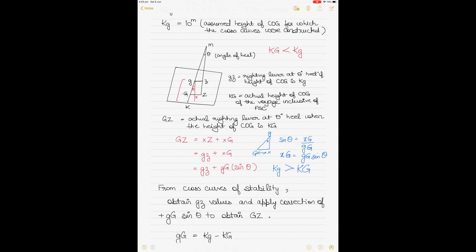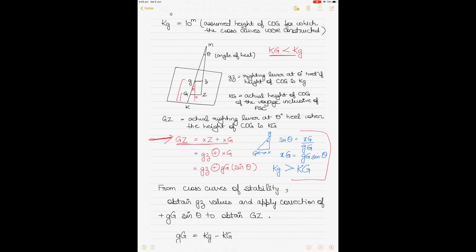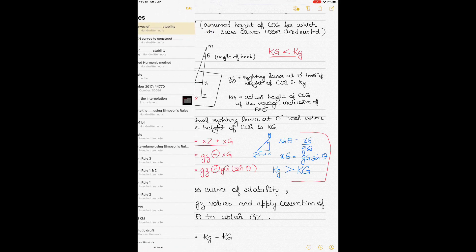Then we had the KG with capital G — the actual height of the center of gravity for the voyage, inclusive of the free surface correction. Depending on whether the actual KG was smaller or larger than the assumed KG, a correction had to be applied to the GZ obtained from the cross curves of stability. The correction is positive when the assumed KG is larger than the actual KG, and negative when the assumed KG is less than the actual KG.